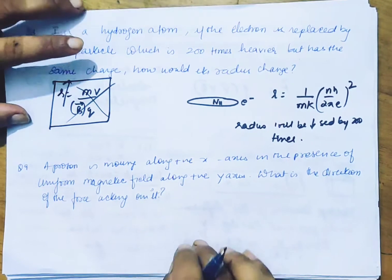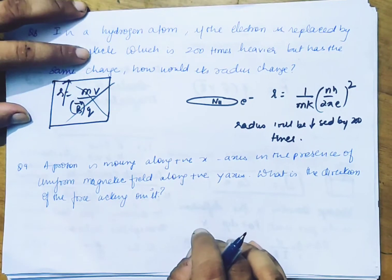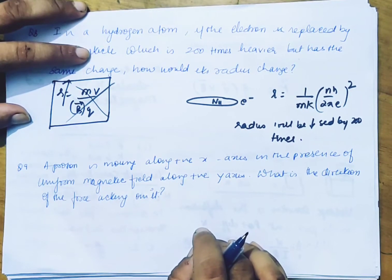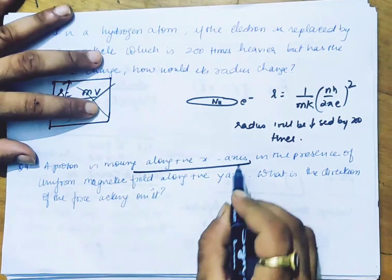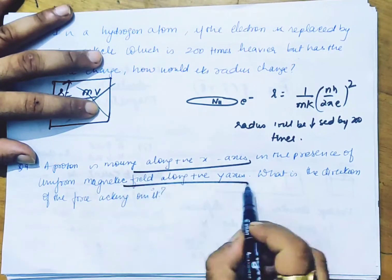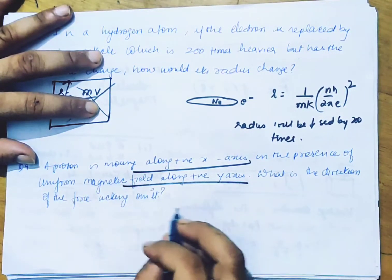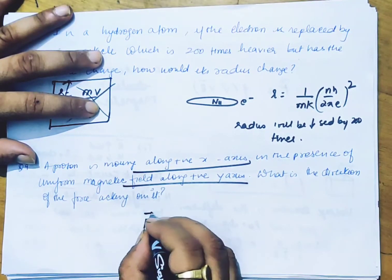A proton is moving along the positive x-axis in the presence of a uniform magnetic field along the y-axis. What is the direction of the force on it?